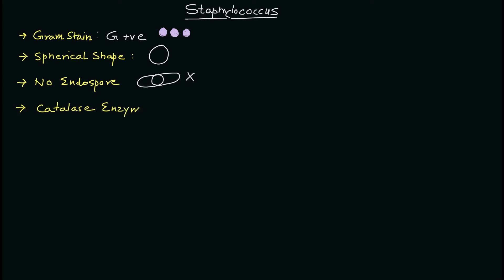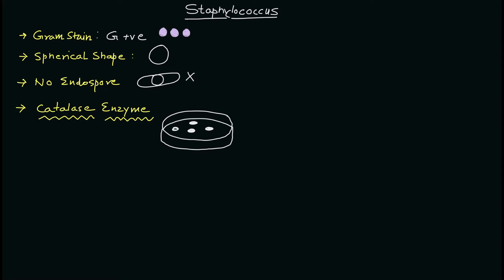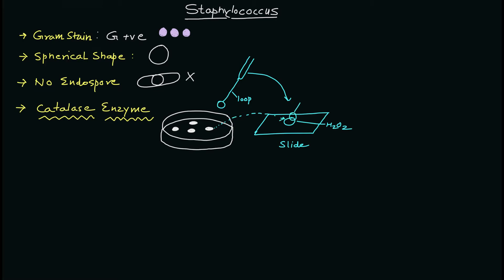An important feature of this genus is catalase enzyme production. Suppose you have a plate where you have Staphylococcus or any bacteria you want to differentiate as Strepto or Staphylo. What you can do is pick up the isolated colonies using a bacteriological loop, place one or a few drops of H2O2 — hydrogen peroxide — on a slide, and then transfer the colony to that slide and mix it. What you will find is the production of O2, and if you see bubble formation, that will indicate the presence of catalase enzyme.